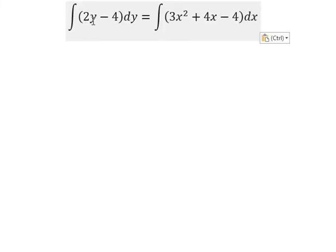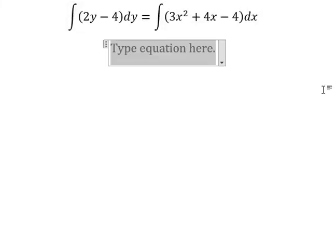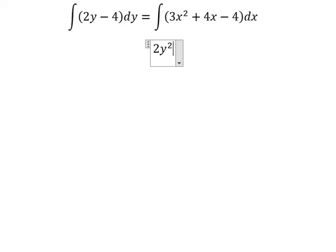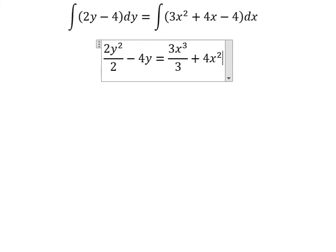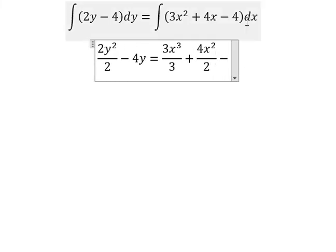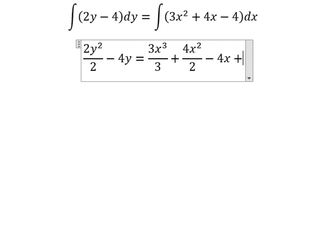The integration of 2y gives 2y² over 2. For -4, we get -4y. On the right side, the integration of 3x² gives 3x³ over 3. For 4x, we get 4x² over 2. The constant -4 becomes -4x, and we add C.